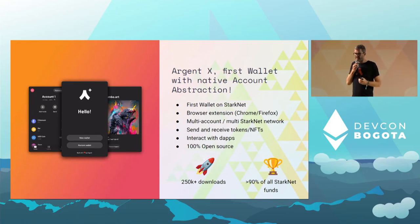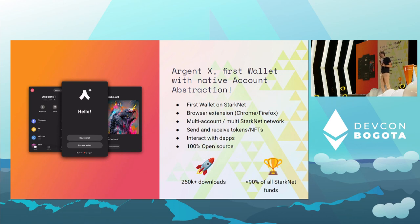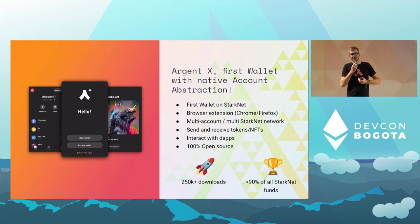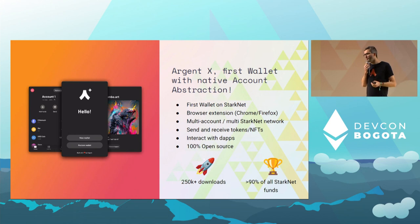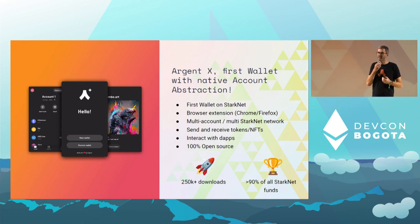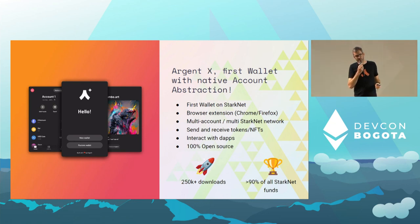We've been working with StarkNet on defining account abstraction, and at Argent we built the first wallet with native account abstraction: Argent X — the first wallet on StarkNet with native account abstraction. It works as a browser extension on Chrome and Firefox, supports multiple accounts, works on StarkNet testnet and mainnet, and does the usual wallet things: send and receive tokens, interact with dApps, and much more. It's 100% open source. Since launching in January we've had more than 250k downloads and are securing more than 90% of the funds on StarkNet mainnet today.